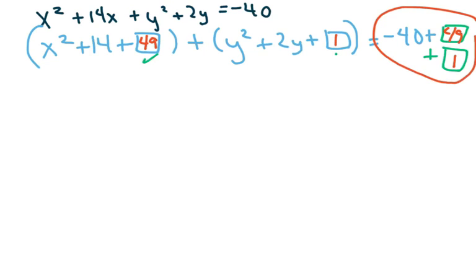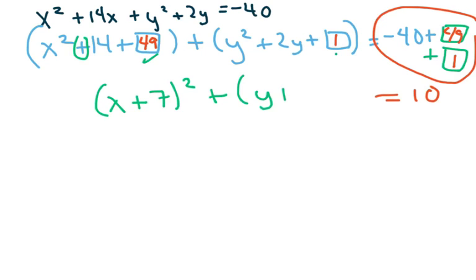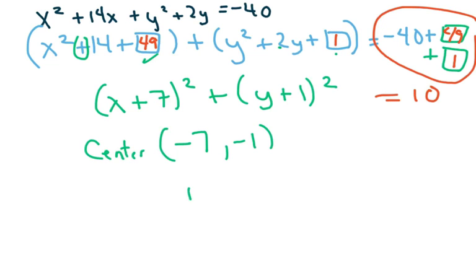The right side equals 10 — that's 15 minus 40 plus 49 plus 1. Simplifying: x plus half of 14 is 7, squared, plus y plus half of 2 is 1, squared, equals 10. The center is negative 7, negative 1, and the radius is the square root of 10.